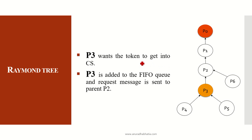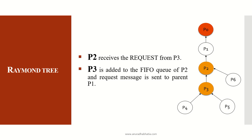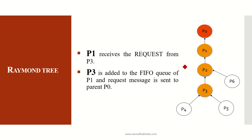Now P3 wants the token to get into the critical state. P3 is requesting the token, so P3 is added to the FIFO queue and the request message is sent to its parent P2. P2 receives the request from P3; P3 is added to the FIFO queue of P2, and the request message is sent to parent P1 since P2 is not holding the token. P1 then receives the request from P3 (via P3→P2→P1); P3 is added to the FIFO queue of P1, and the request message is sent to P0 which is holding the token.